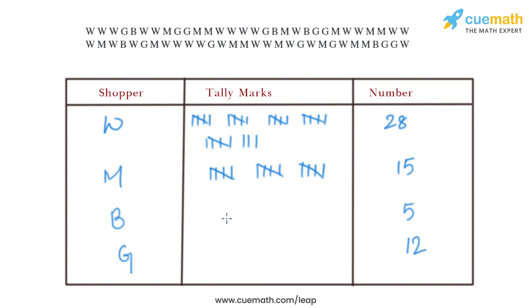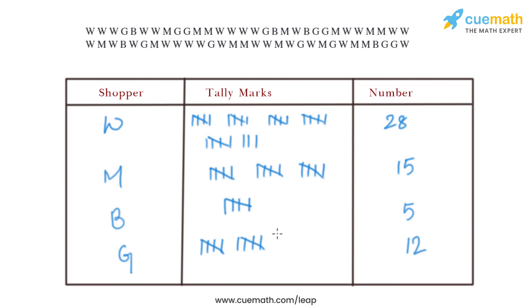In the same way we write tally marks for boys. There are 5 boys, so: 1, 2, 3, 4, and 5. Now for girls, there are 12: 1, 2, 3, 4, 5 — then another 1, 2, 3, 4, 5 — that makes 10 — and then 11 and 12. This completes the frequency distribution table using tally marks.